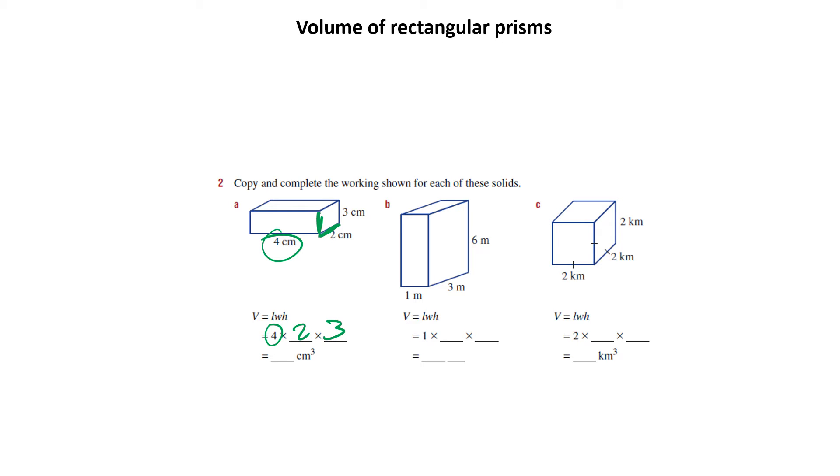So 4 times 2 is 8, times 3 is 24, and that's 24 centimeters cubed. One like this, don't forget the units.